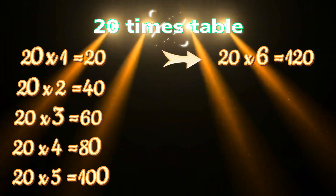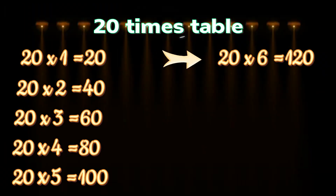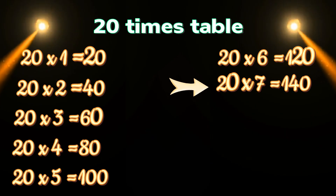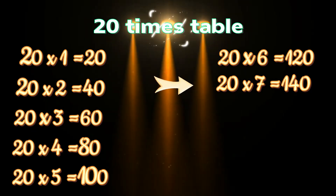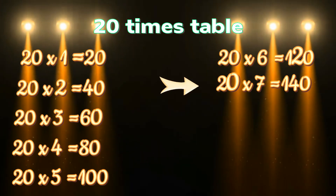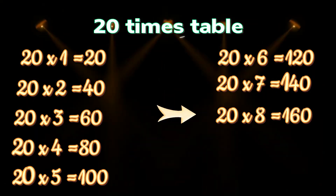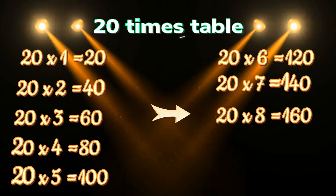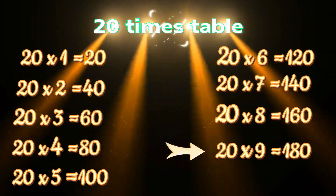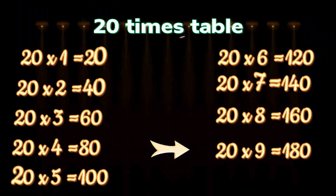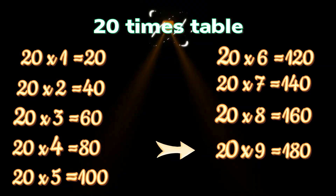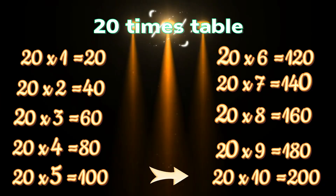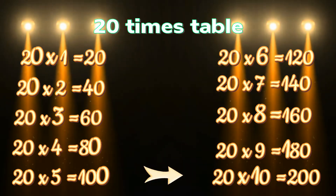20 times 6 is equals to 120. 20 times 7 is equals to 140. 20 times 8 is equals to 160. 20 times 9 is equals to 180. 20 times 10 is equals to 200.